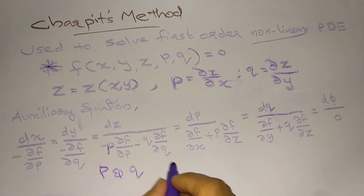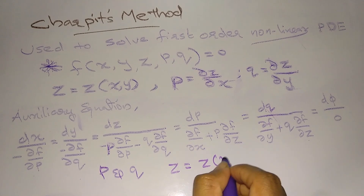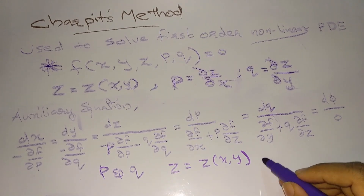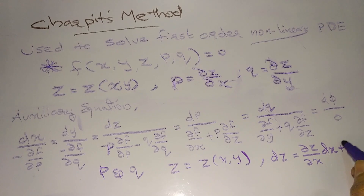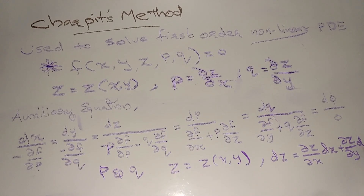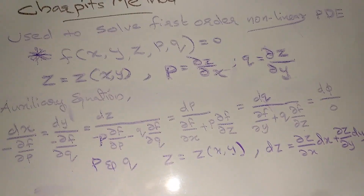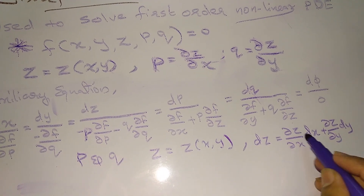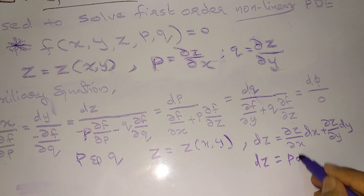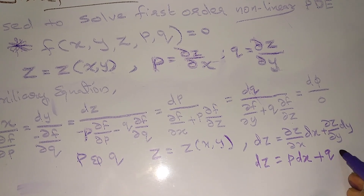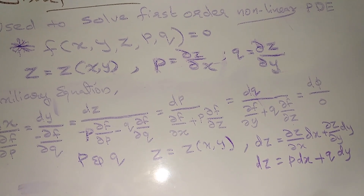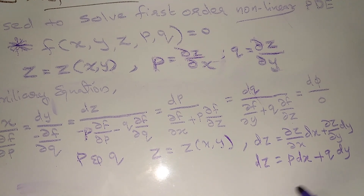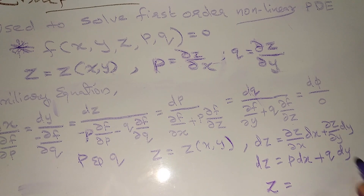After finding the values of p and q, since z is a function of x and y, we can write dz = (∂z/∂x)dx + (∂z/∂y)dy. Since ∂z/∂x = p, this becomes dz = p dx + q dy. We then replace p and q to get the solution z in terms of x and y.